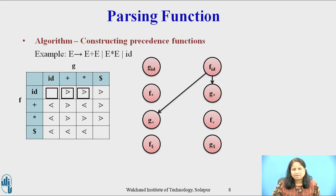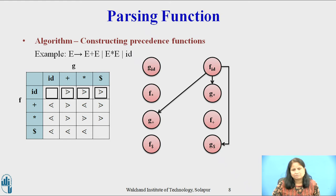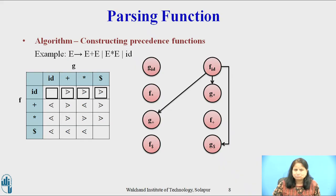The relation between f(id) and g(star) is takes-precedence-over, so there will be an arc from f(id) to g(star). The relation between f(id) and g(dollar) is also takes-precedence-over, so there will be an arc from f(id) to g(dollar).